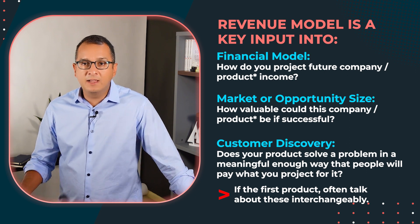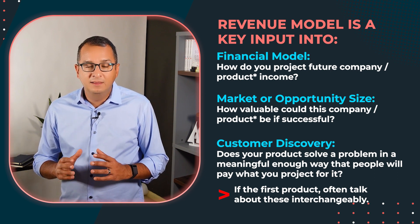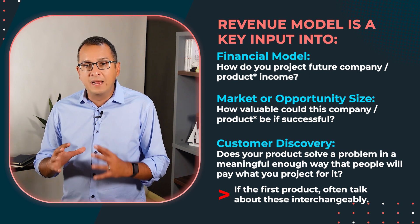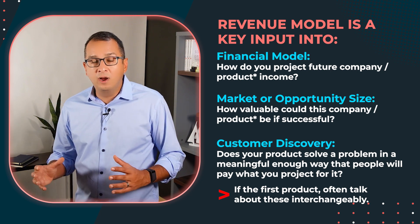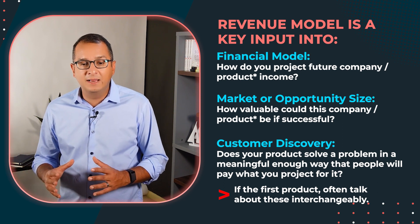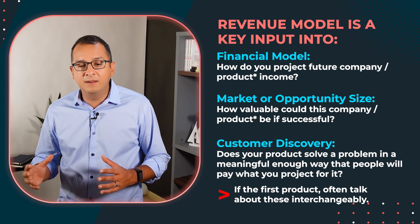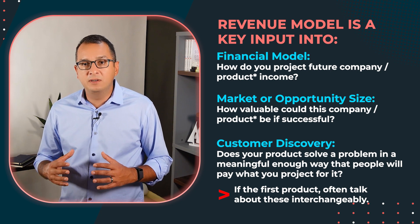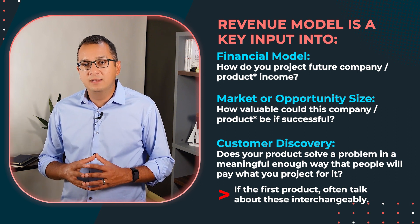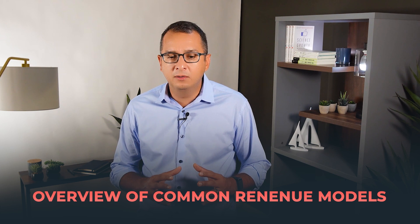On the slide, I'm talking about company slash product in each of those categories. The reason is that in many small companies these are often used interchangeably — when companies are starting, they typically have one primary product. But as companies get larger, you have different product lines with different customer bases, and you really end up with revenue models per product. This gets back to the essence of what we're going to talk about across all nine of these videos: thinking about your revenue model and financial metrics at the product level, not the overall company level.